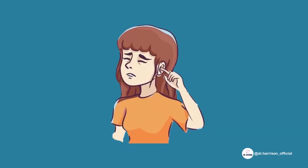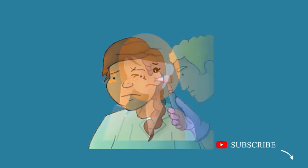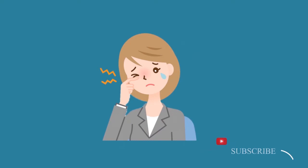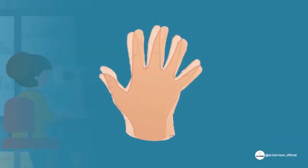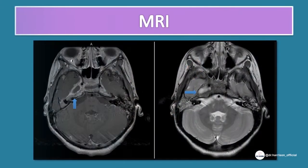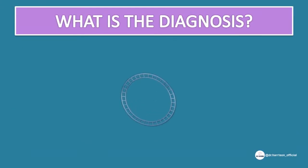A 40-year-old woman with chronic suppurative otitis media came with complaints of fever, headache, foul-smelling ear discharge, and retroorbital pain. Ocular examination revealed the patient is having mild diplopia. Following it, a brain MRI was taken and it shows a lesion in the petrous apex. What is the diagnosis?